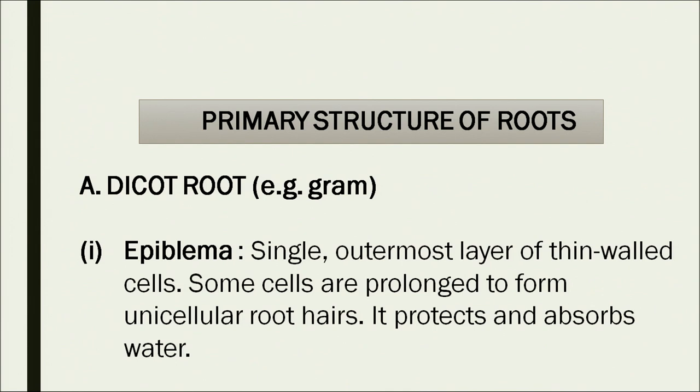Now let's talk about the inner structure of roots — what kind of tissues make a root. We will talk about dicot roots and monocot roots and understand the difference between the two. Generally, we take a root, cut it transversely, take a very thin slice of tissue, and examine it under a microscope. A lot of structures become visible, and we can see all the tissues that compose the transverse section. I'll explain it layer by layer, moving from outside to inside.